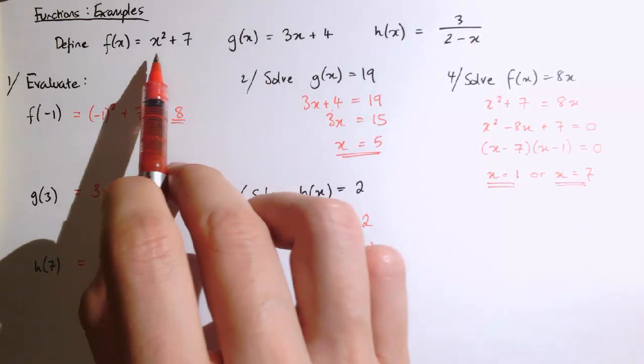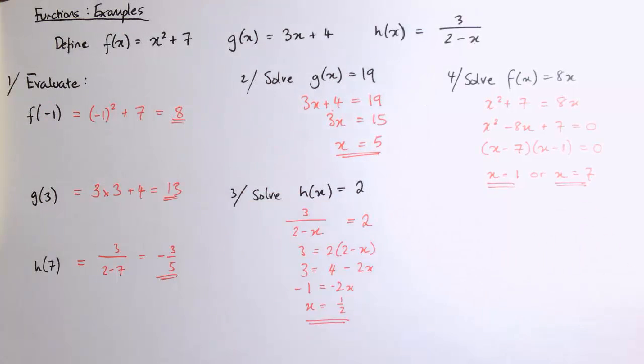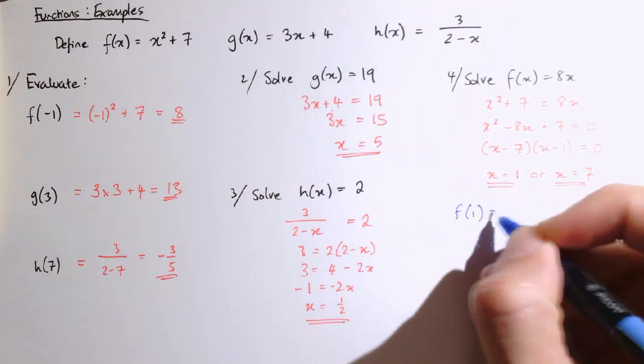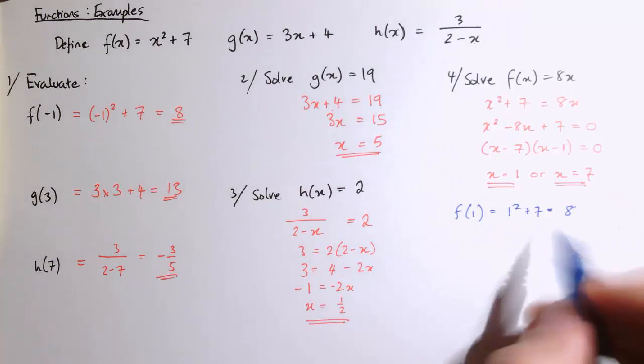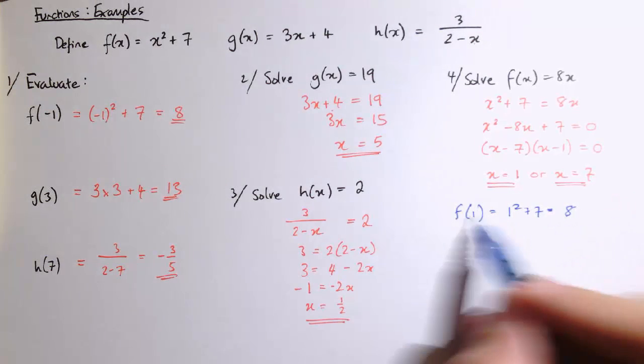And again, looking back at the equation to start off with here, if we put 1 into here, we get f of 1. That's 1 squared plus 7, which is 8. So that one is 8 times 1. That's 8 times the input.